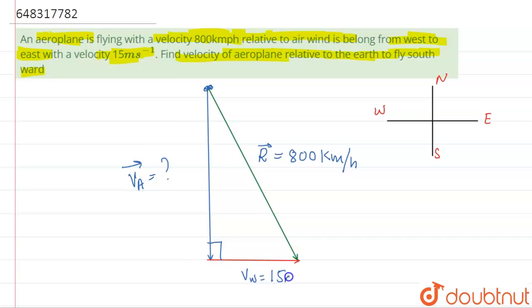Now what we'll do? Since this is a 90 degree angle, we can use the Pythagoras theorem over here. Velocity of wind is 15 meter per second.